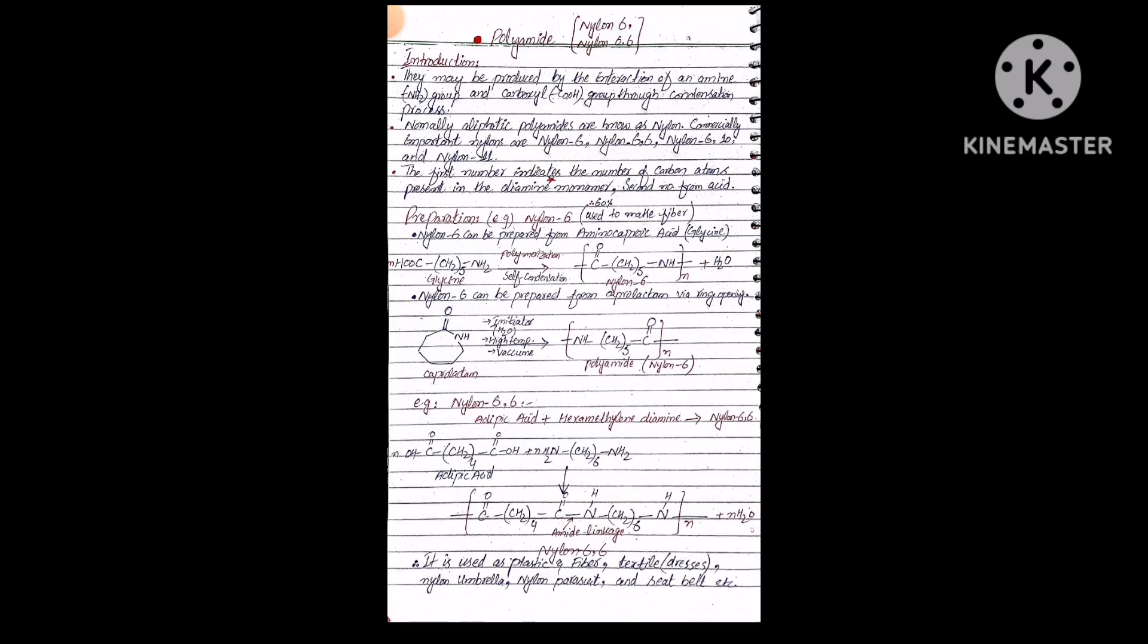We will discuss a last example of synthetic polymers: polyamide, which is an important topic. We will discuss examples of polyamide in the form of nylon 6 and nylon 6-6. First of all we will discuss its introduction.